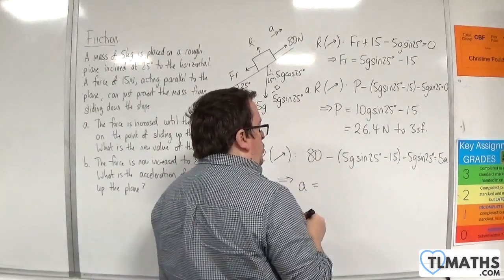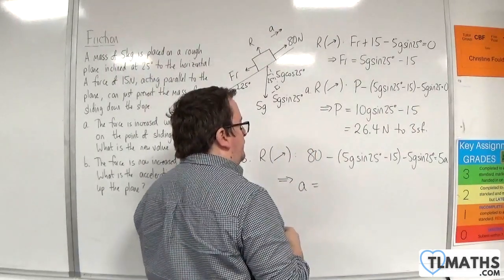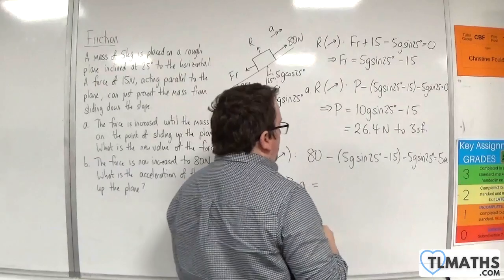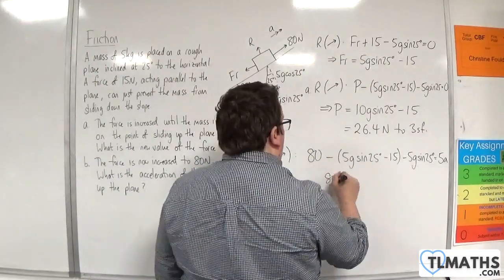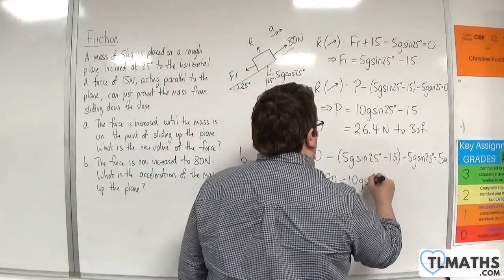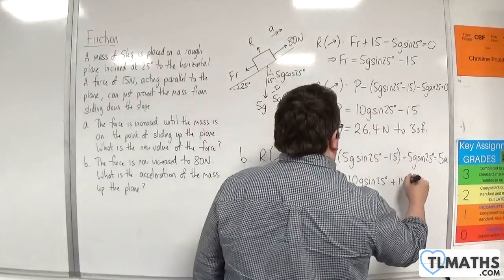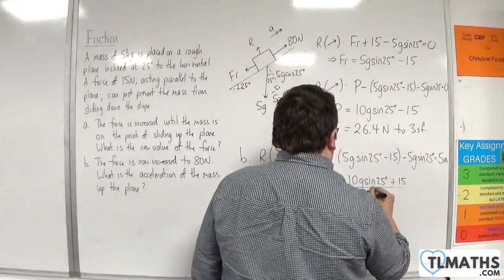So the acceleration is going to be this left-hand side divided through by 5. So we will have 80 take away 10g sin of 25 and then plus 15, all divided through by 5.